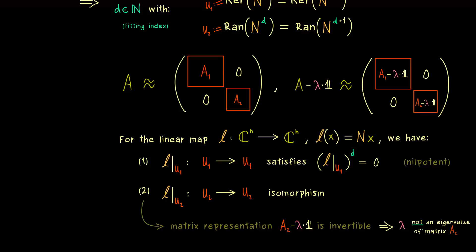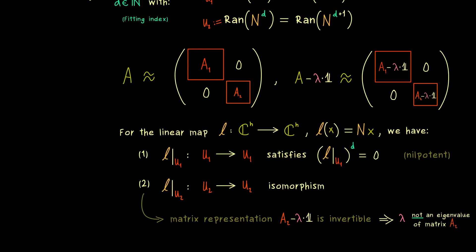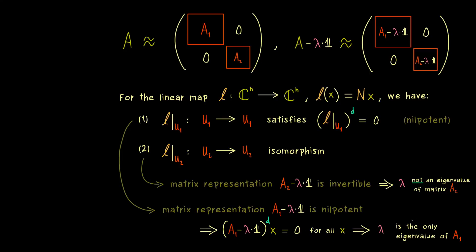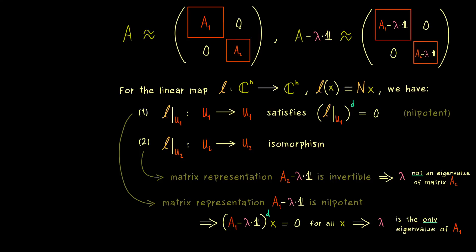This is an important conclusion: it immediately tells us that the eigenvalue lambda is not found in the second block matrix of A. Now the question is how many times we find lambda in the first block matrix. Since we have a nilpotent map, the matrix representation A1 minus lambda times the identity is also nilpotent. Hence, raising it to the power D gives the zero matrix. So the only possible eigenvalue for A1 minus lambda times the identity is 0, which immediately implies that the matrix A1 can only have the eigenvalue lambda. So lambda is the only possible eigenvalue of A1.